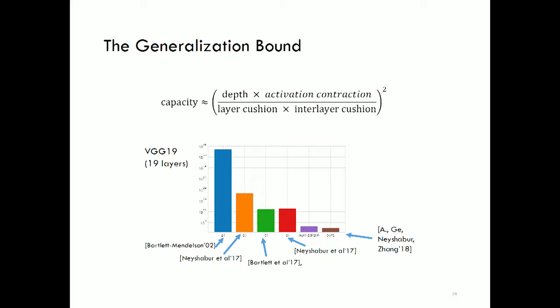There's a generalization bound: the effective number of parameters or effective capacity is given by an expression involving those quantities — layer cushion, inter-layer cushion, and inter-layer smoothness — which was the basis of the plot shown. The proof that the compression works: if you measure those constants for the neural net — activation contraction, layer cushion, inter-layer cushion, etc. — and plug in those values, you can show you can compress a neural net to have that kind of capacity. That's the mathematical proof.